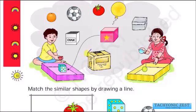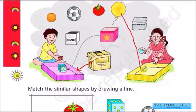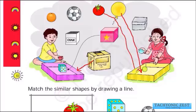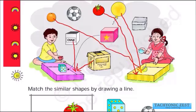We will now sort the shapes. This rectangle goes into the rectangular box. This balloon is circular so we place it in the circular box. This tomato is circular — we place it in the circular box. This orange is circular — we place it in the circular box. This football is also circular and we place it in the circular box as well.